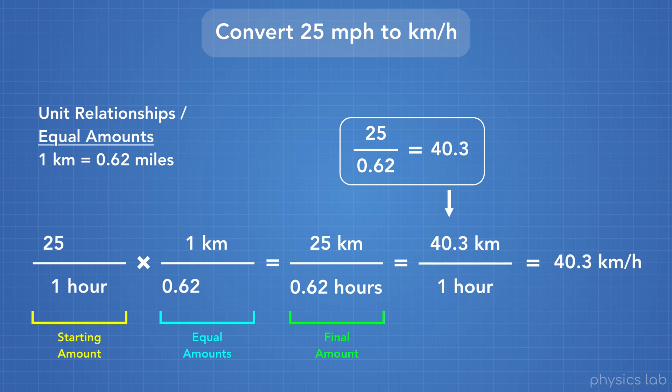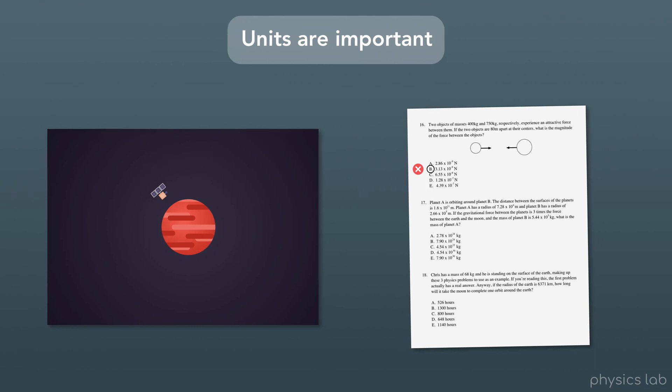So that's how we convert between units. Alright, so let's recap. First off, we learned that units are important to keep track of. You might crash a 193 million dollar space orbiter, or you might just get the wrong answer on a test. But let's not risk it.